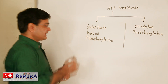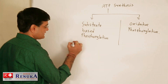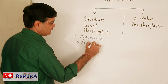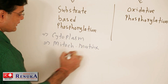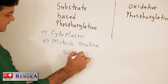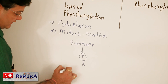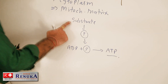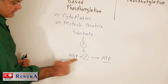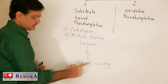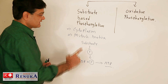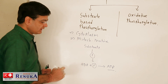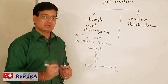What is substrate-based phosphorylation? This process occurs in the cytoplasm and in the mitochondrial matrix. The phosphate released from the substrate helps to phosphorylate ADP to form ATP. So the substrate releases the phosphate which reacts with ADP to form ATP, and that is why it is called substrate-based phosphorylation — the substrate is responsible for the phosphorylation process.